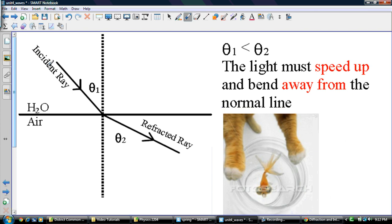Now, if the opposite happens, you have the incident ray coming down. If it's going from H2O to air, so it speeds up, it bends away from the normal line. So you have the incident ray coming in. Here's theta 1. Theta 1 now is less than theta 2.